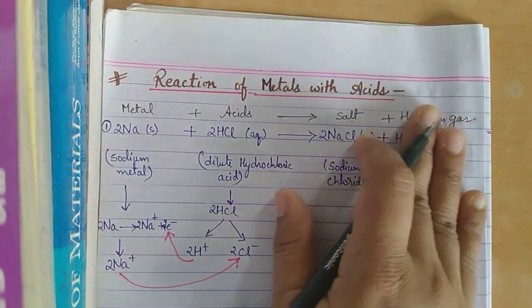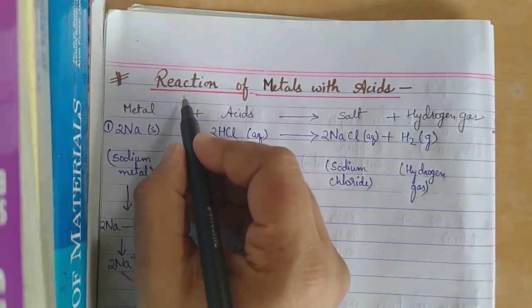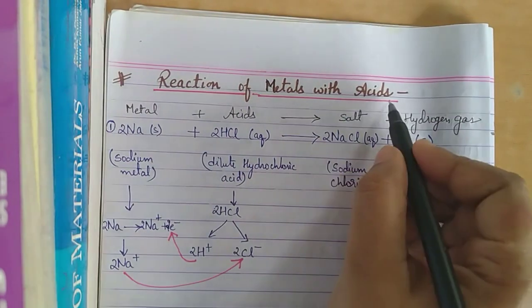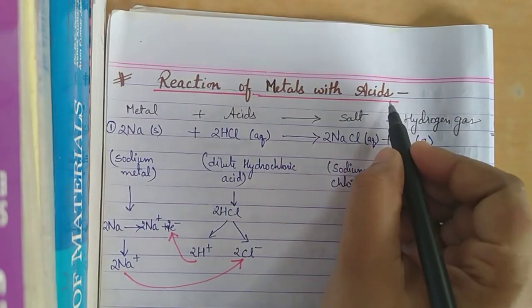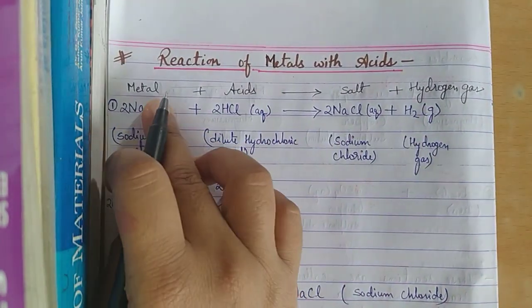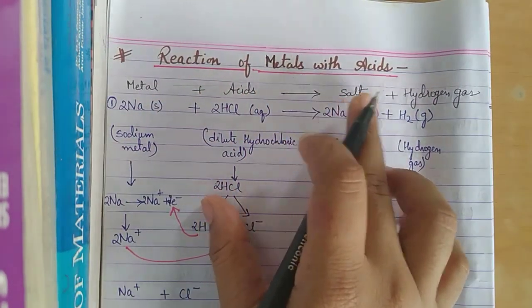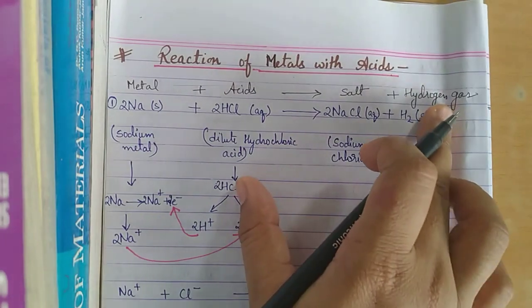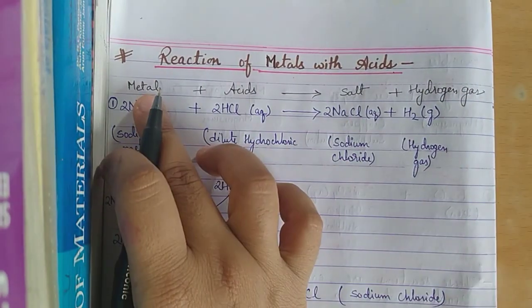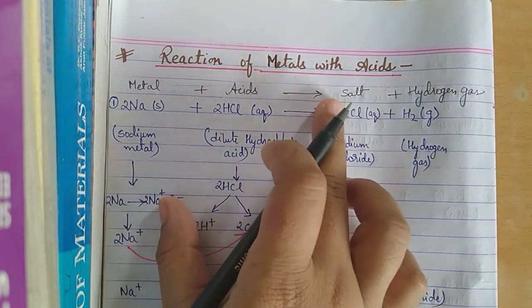In this video we are going to learn about how metal reacts with acid. Metals react with acid to form salt and hydrogen gas.